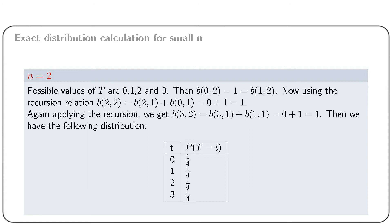Assume n = 2. Then n(n+1)/2 = 3, and hence possible values of T are 0, 1, 2, and 3. Then b(0,2) and b(1,2) are both unity. Using the recursion relation, we get b(2,2) = b(2,1) + b(0,1). Now b(2,1) = 0 as getting 2 with n = 1 is impossible, but b(0,1) = 1. Then b(2,2) = 1. Applying the recursion again, b(3,2) = b(3,1) + b(1,1). Again b(3,1) = 0, however b(1,1) = 1. Thus b(3,2) = 1. Hence each value of T occurs with equal probability 1/4.